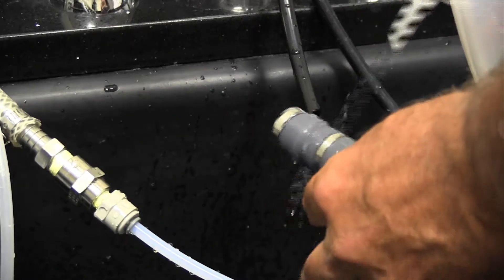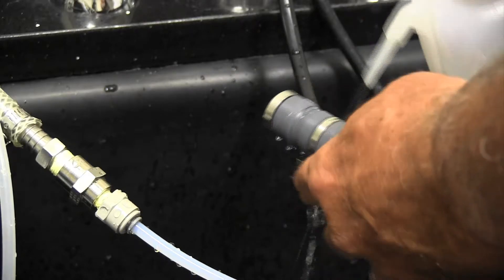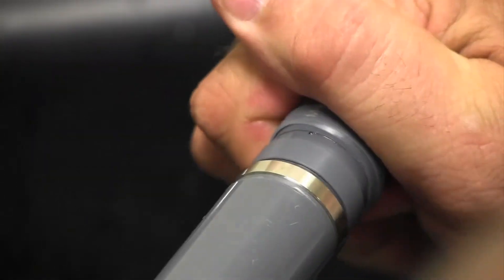Rinse off any excess electrolyte that escapes from the top of the cap and through the vent, and then dry the probe exterior. Now be certain the membrane cap has been hand tightened as far as it will go.